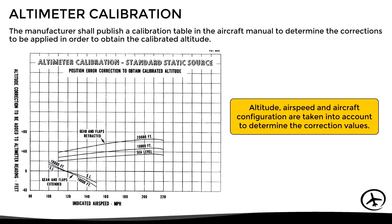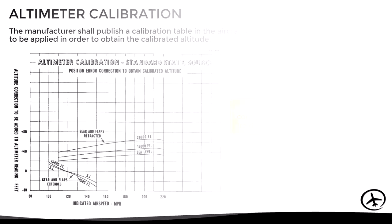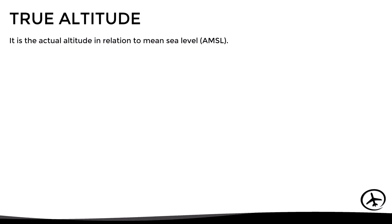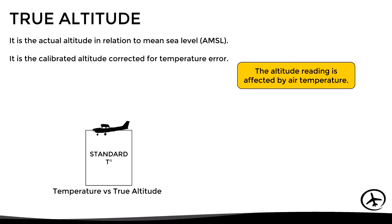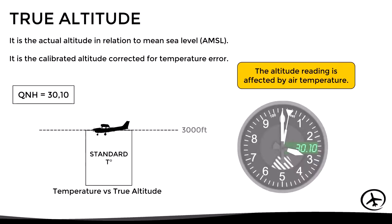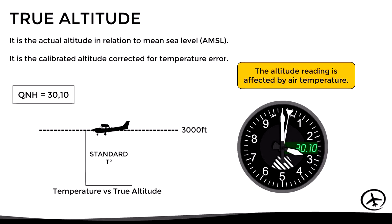So far we have seen how instrument and position errors affect the altitude reading, but there is another factor which also affects barometric altimeters: temperature. This brings us to the concept of true altitude. As its name suggests, it is the actual altitude in relation to mean sea level, and in theory it is obtained by correcting the calibrated altitude for temperature error. For example, if an aircraft is flying under standard temperature conditions with the current QNH of 30.10 adjusted on the altimeter, it will indicate the true altitude.